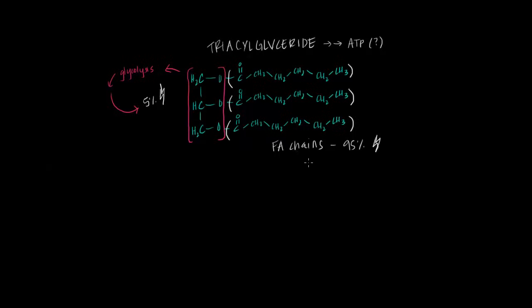So because these fatty acid chains are contributing to the bulk of the energy that we're extracting, we're going to focus on how we extract ATP from these fatty acid chains in particular. And now to help us get a bird's eye view of how we're able to extract ATP from these fatty acid chains, I've actually went ahead and drawn out a 16-carbon saturated fatty acid that our body can synthesize, which is called palmitic acid.